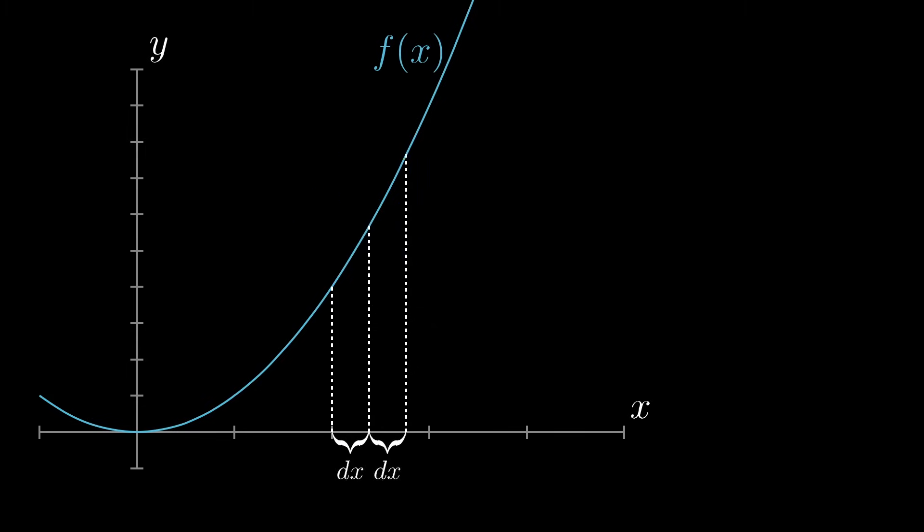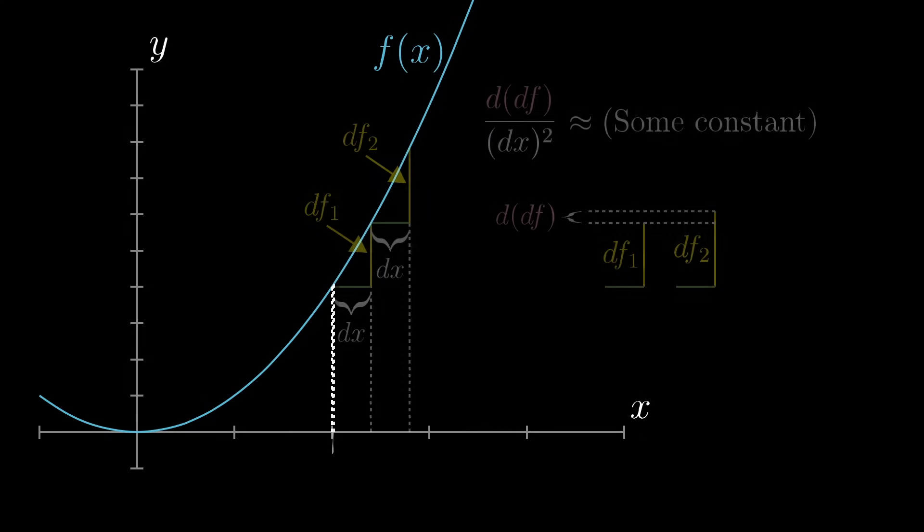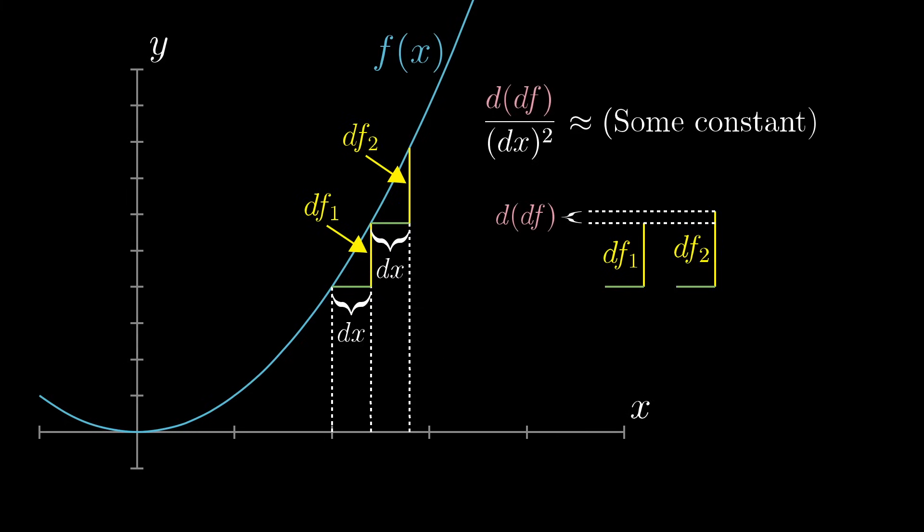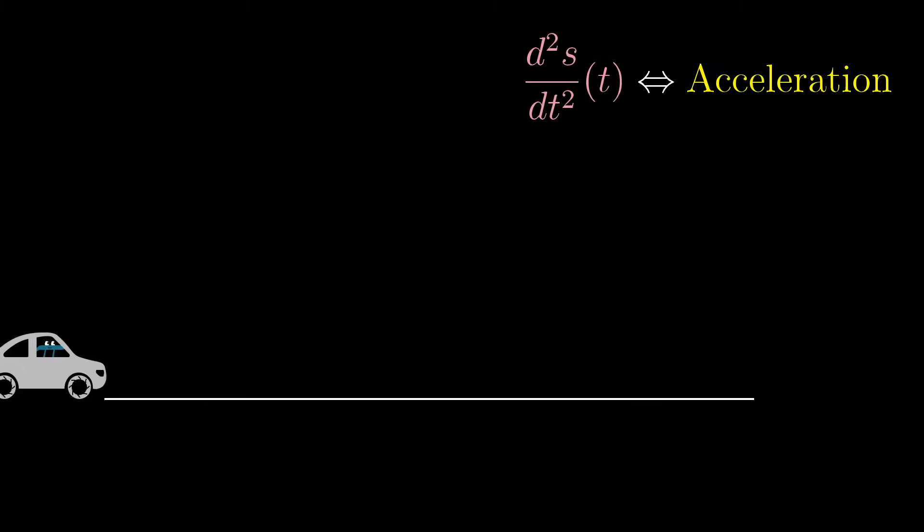Or more precisely, it's whatever that ratio approaches as dx approaches 0. Even though it's not like this letter d is a variable being multiplied by f, for the sake of more compact notation, you'd write it as d squared f divided by dx squared, and you don't typically bother with any parentheses on the bottom.